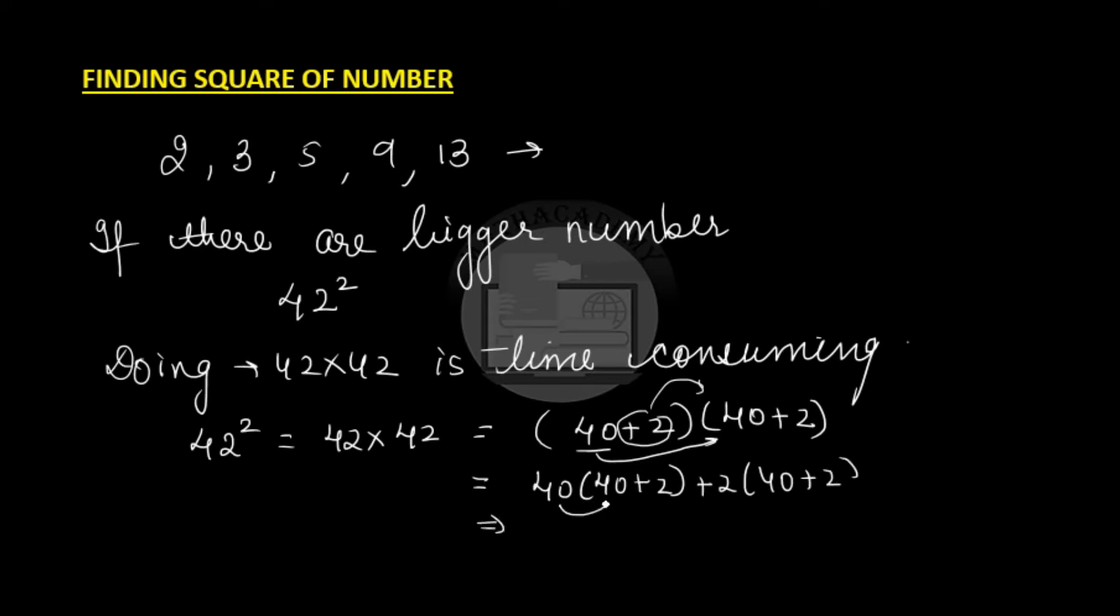Now we will distribute 40 again. So, 40 times 40 is 1600, 40 times 2 is 80 plus 2 times 40 is plus 80 and plus 2 times plus 2 is plus 4.